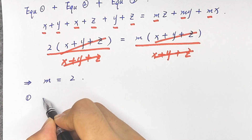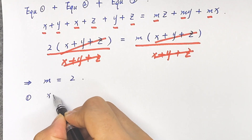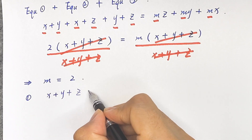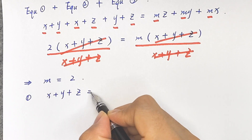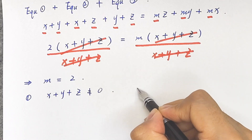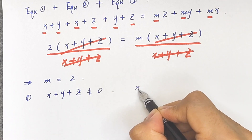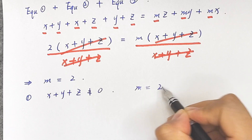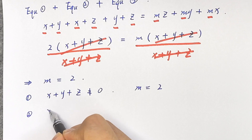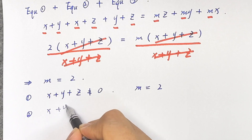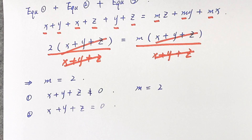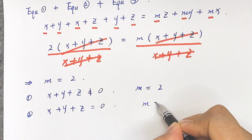We know that when the value of x plus y plus z is not equal to 0, m equals 2. But if the value of x plus y plus z equals 0, what is the value of m?